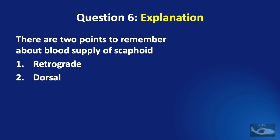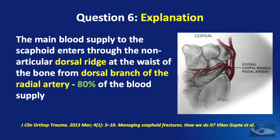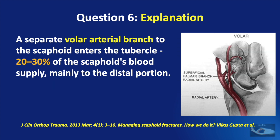As far as the blood supply to the scaphoid bone is concerned, we need to remember two points: the blood supply is retrograde and the blood supply is dorsal. The main blood supply to the scaphoid enters through the non-articular dorsal ridge at the waist of the bone from the dorsal branch of the radial artery, accounting for 80% of the blood supply. There is also a volar supply — a separate volar arterial branch enters the tubercle, giving about 20 to 30% of the scaphoid's blood supply, mainly to the distal portion.